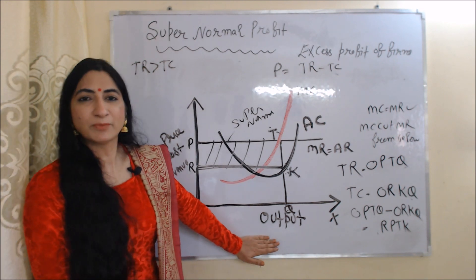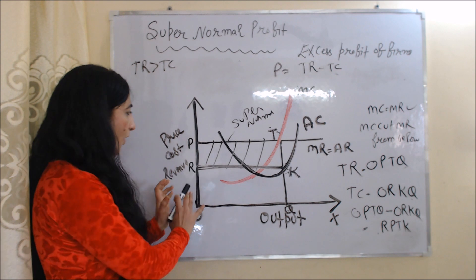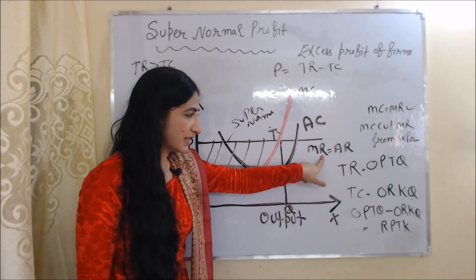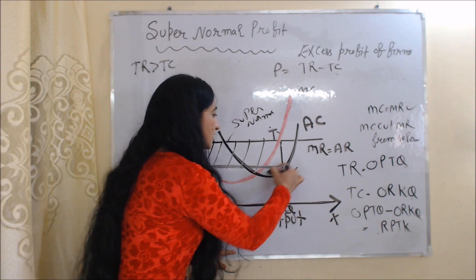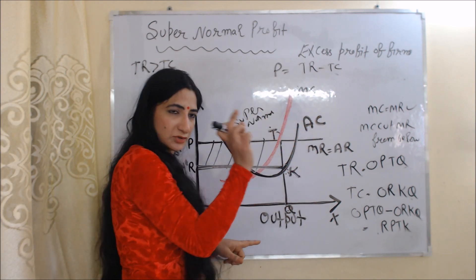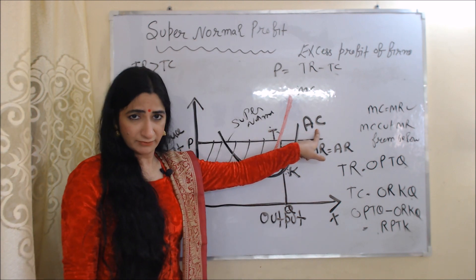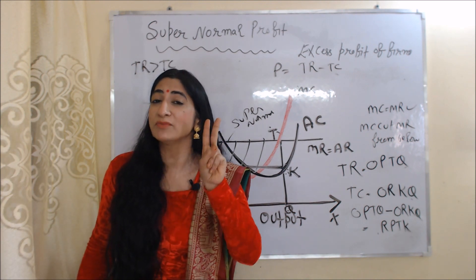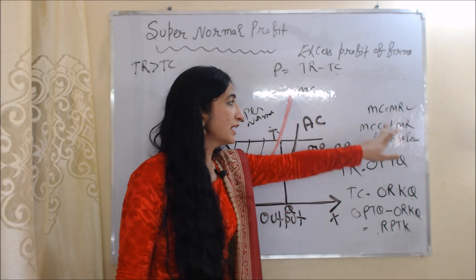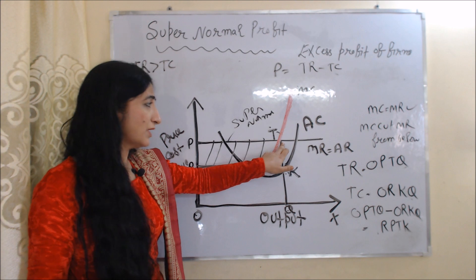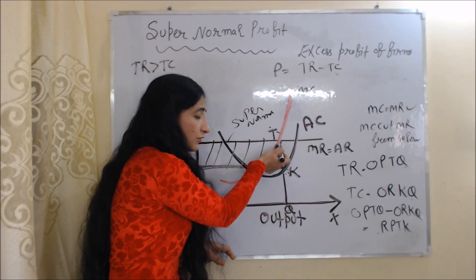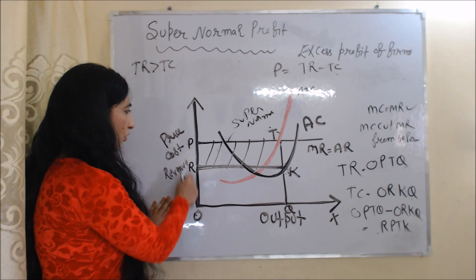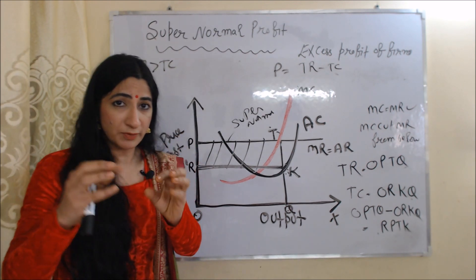We will see super normal profit with the help of this diagram. On the x-axis we have output, and on the y-axis we have price, cost, and revenue. The horizontal line represents MR and AR. The red curve represents MC and the black curve represents AC. At point T, MC equals MR and MC cuts MR from below, so T is our stable equilibrium point. Our equilibrium output is OQ and equilibrium price is OP.